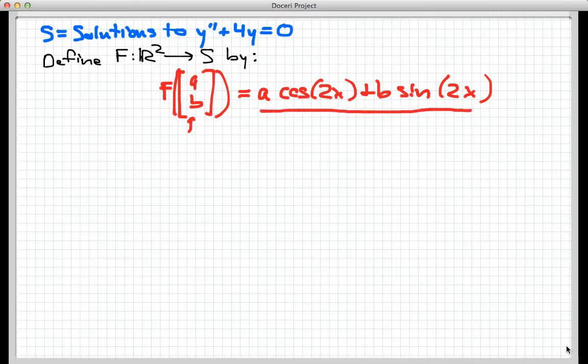We saw in an earlier screencast that any linear combination of cos(2x) and sin(2x) will be a solution to this differential equation. So this actually accepts two-dimensional vectors from R² as inputs and spits out actual solutions to that differential equation as outputs. As a function, this is all well and good, but is it a linear transformation? Let's walk through the steps. I need to show two things: first that vector addition is preserved, and second that scalar multiplication is preserved. Let's start with vector addition.